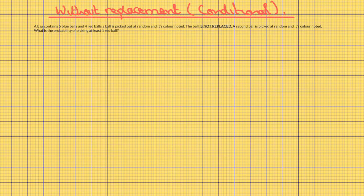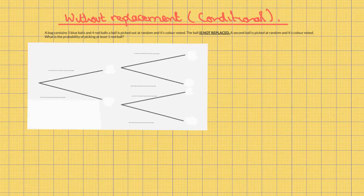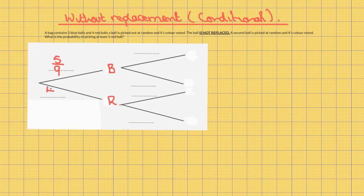Tree diagrams without replacement — conditional. A bag contains five blue balls and four red balls. A ball is picked out at random and its color noted. The ball is not replaced. A second ball is picked at random and its color noted. What is the probability of picking at least one red ball? Draw a tree diagram. Write in the events and work out the probability of each event. For the first pick you could pick a blue ball or a red ball. The probability of blue is five out of nine; the probability of red is four out of nine.